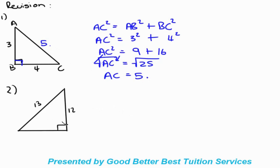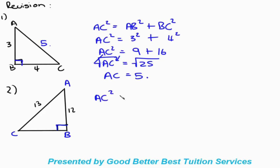Moving on to number two: we are given two sides again — one of the sides plus the hypotenuse. We know it's the hypotenuse because it's opposite the right angle. Since we're given the hypotenuse and one other side, we have a missing side that is not the hypotenuse. So our equation starts as AC squared equals AB squared plus BC squared, but we need to isolate BC squared.